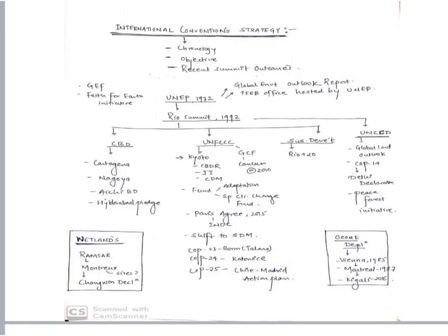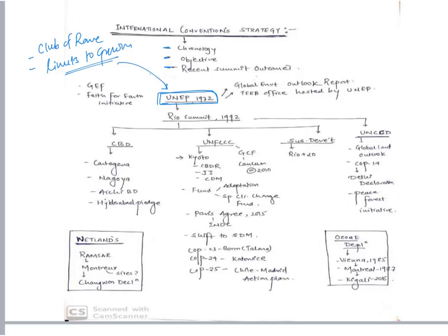For international conventions, one should know the chronology, the objective of each convention or treaty or coalition, and recent summit outcomes. Before studying UNEP, have a fair idea about the Club of Rome and the Limits to Growth concept — this is all given in NCERT. When studying UNEP — United Nations Environment Programme of 1972 headquartered in Nairobi, Kenya — simultaneously study funds like the Global Environment Fund (GEF): who contributes to it, who manages it, and to which programs does GEF fund. Also know what various reports are published by UNEP, and whether UNEP is hosting any important body like TEEB.